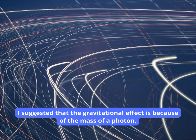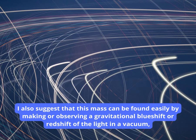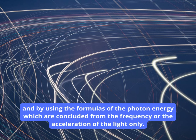I suggested that the gravitational effect is because of the mass of a photon. I also suggest that this mass can be found easily by making or observing a gravitational blue shift or red shift of the light in a vacuum. And by using the formulas of the photon energy which are concluded from the frequency or the acceleration of the light only.